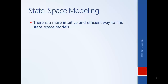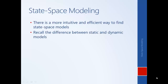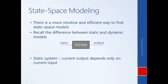In order to understand this approach we need to recall the difference between a static model and a dynamic model. Consider our system in terms of inputs that we put into the system and the resulting outputs. If our system is static, knowledge of the current input completely determines the current output. If I know that a five is being put into the system, that completely determines the output, and the relationship is basically algebraic.